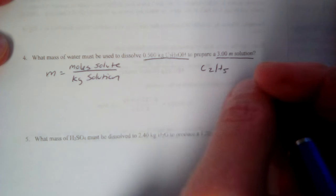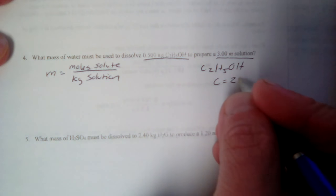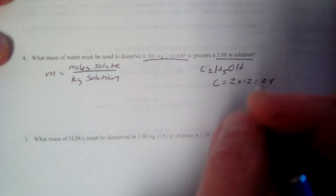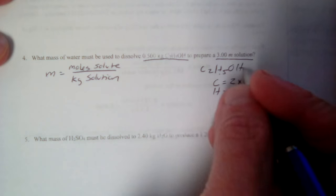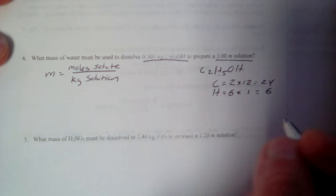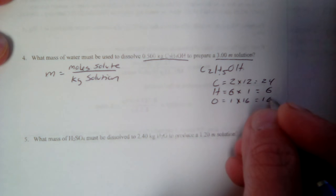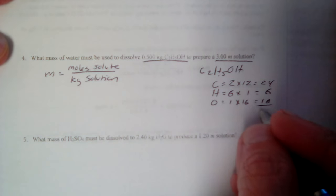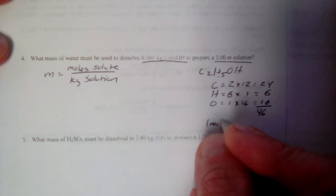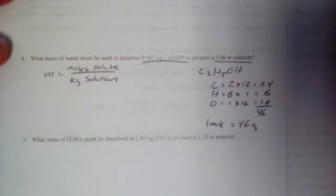C2, H5, OH. Carbons, I have two of them, times 12 is 24. Hydrogens, I've got six of them, five here, one there. Times one is six. Oxygens, I have one, times 16 is 16. Add them all up, 24 plus six plus 16 is 46. So one mole of that equals 46 grams of it.